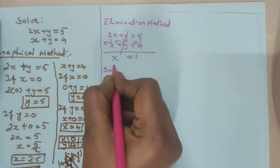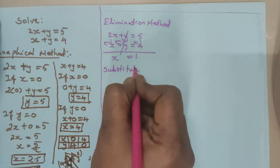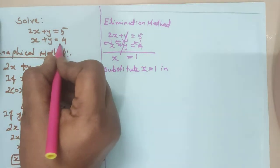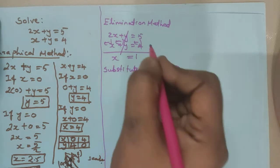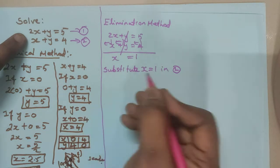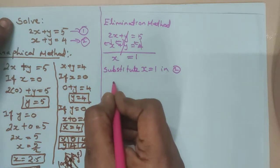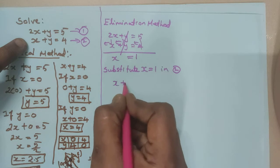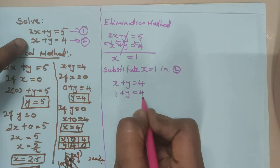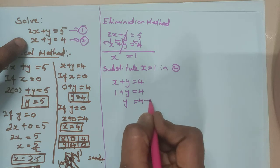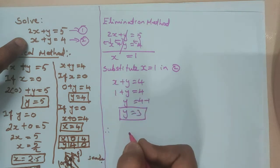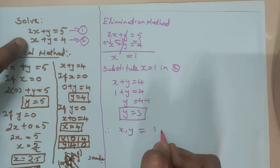We have found x. Now substitute x is equal to 1 in any one of the equations. Let me substitute in the second equation since it is simpler: x plus y is equal to 4. Substitute x as 1. Bring 1 to the other side — positive 1 becomes negative 1. So y is equal to 4 minus 1, which is 3. Therefore x comma y is equal to 1 comma 3.